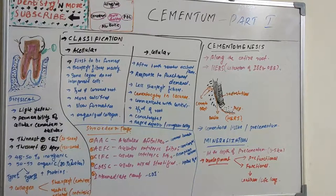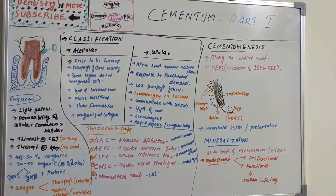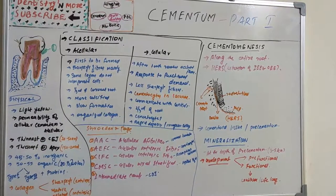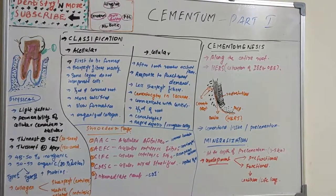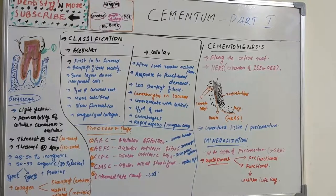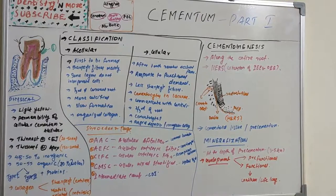Such proteoglycans are seen in the non-collagenous matter. In addition to collagen — extrinsic and intrinsic — and non-collagenous matter, we also have a few growth factors and other cementum-derived growth factors.